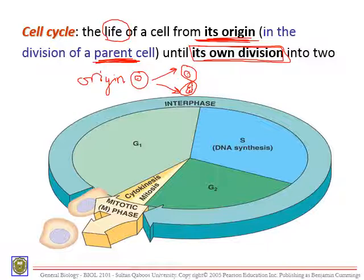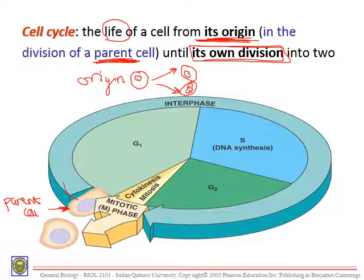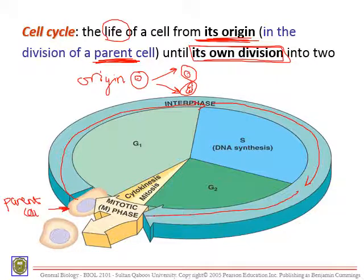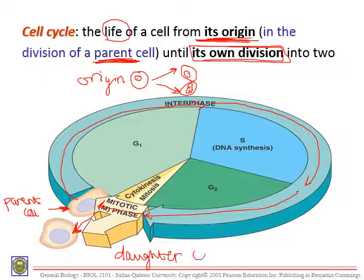Let's have a quick look at this cycle. This cell came from a parent cell. We call it a parent cell because it will undergo this cycle, pass through it, and then produce two daughter cells. This series of events we call the cell cycle. I'm going to discuss all of these in detail later on.